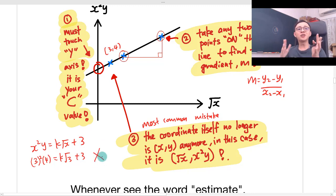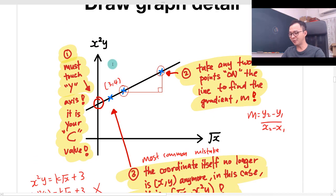Why? Because the (3, 4) is no longer on the X axis and Y axis. So therefore, if you have the coordinate on this diagram, this diagram you realize this coordinate is basically square root X and this coordinate is X square Y.